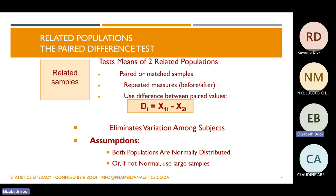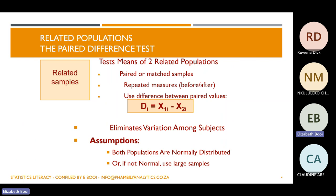There are assumptions that also need to be met. Both populations or samples have to be normally distributed, or if they are not normally distributed, then the sample size has to be large. When we talk about large, we're talking about a sample size of larger than 30.